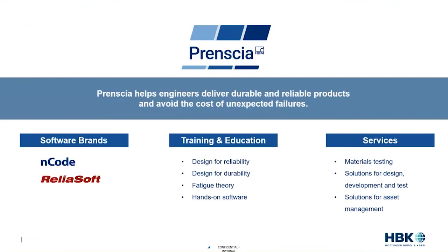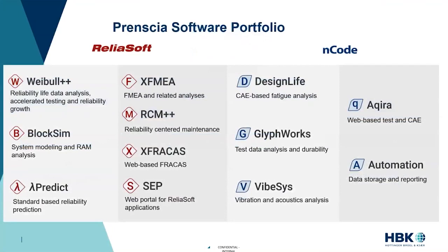If you're attending this webinar, you're probably already familiar with our brand, but just in case you're not: FMEA is the software arm of HBK containing ReliaSoft and ENCODE softwares for reliability and durability analysis, respectively. We also offer a whole host of training classes, engineering services, and solutions for asset management. Our primary products are ReliaSoft and ENCODE. The ReliaSoft desktop applications are the leftmost column here — Weibull, Bloxim, Lambda Predict, XFMEA, RCM. But today we're going to be talking about SCP, which allows you to interact in a web-based distributed way with the desktop applications and the results of the analyses coming out of those.